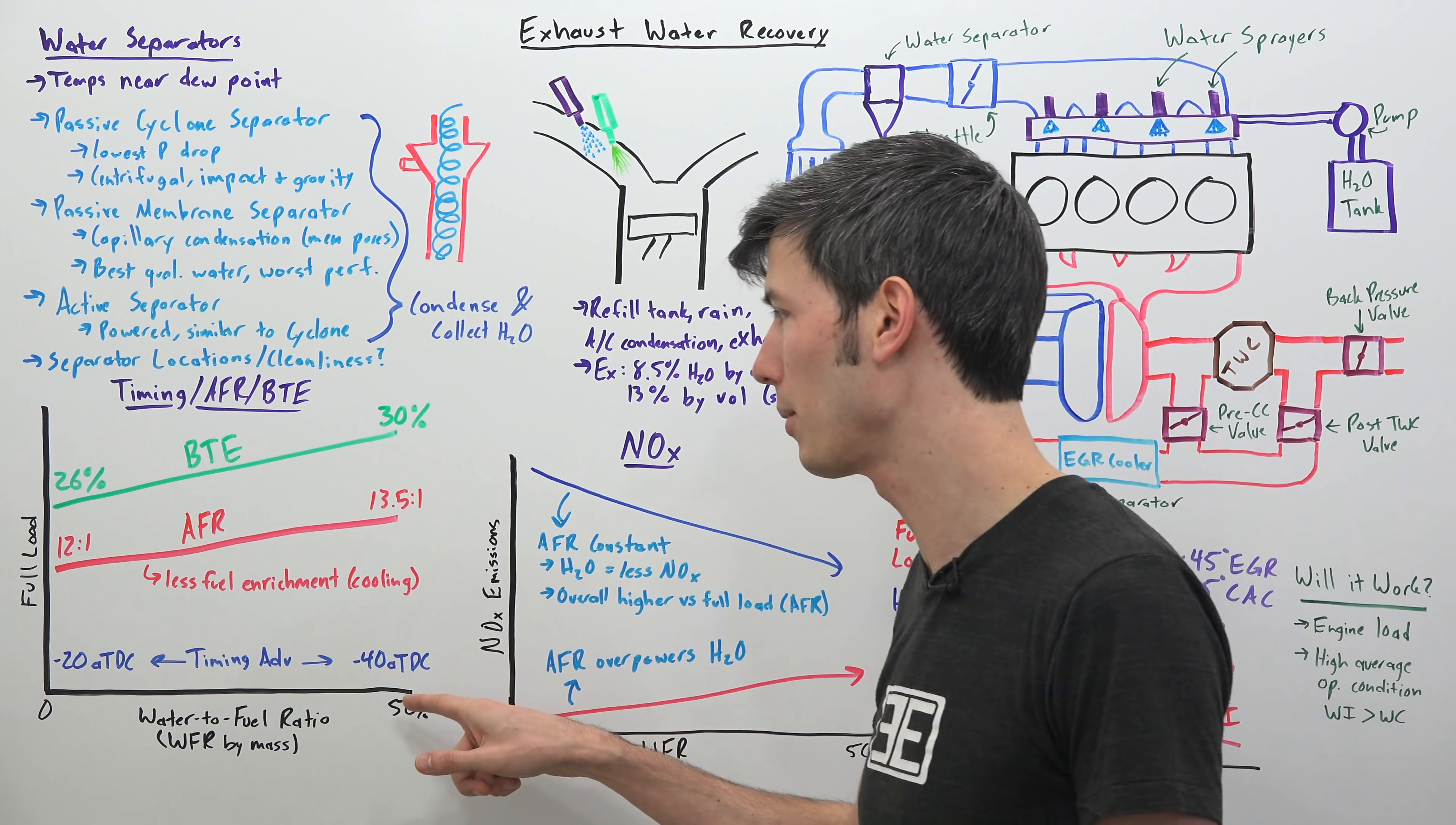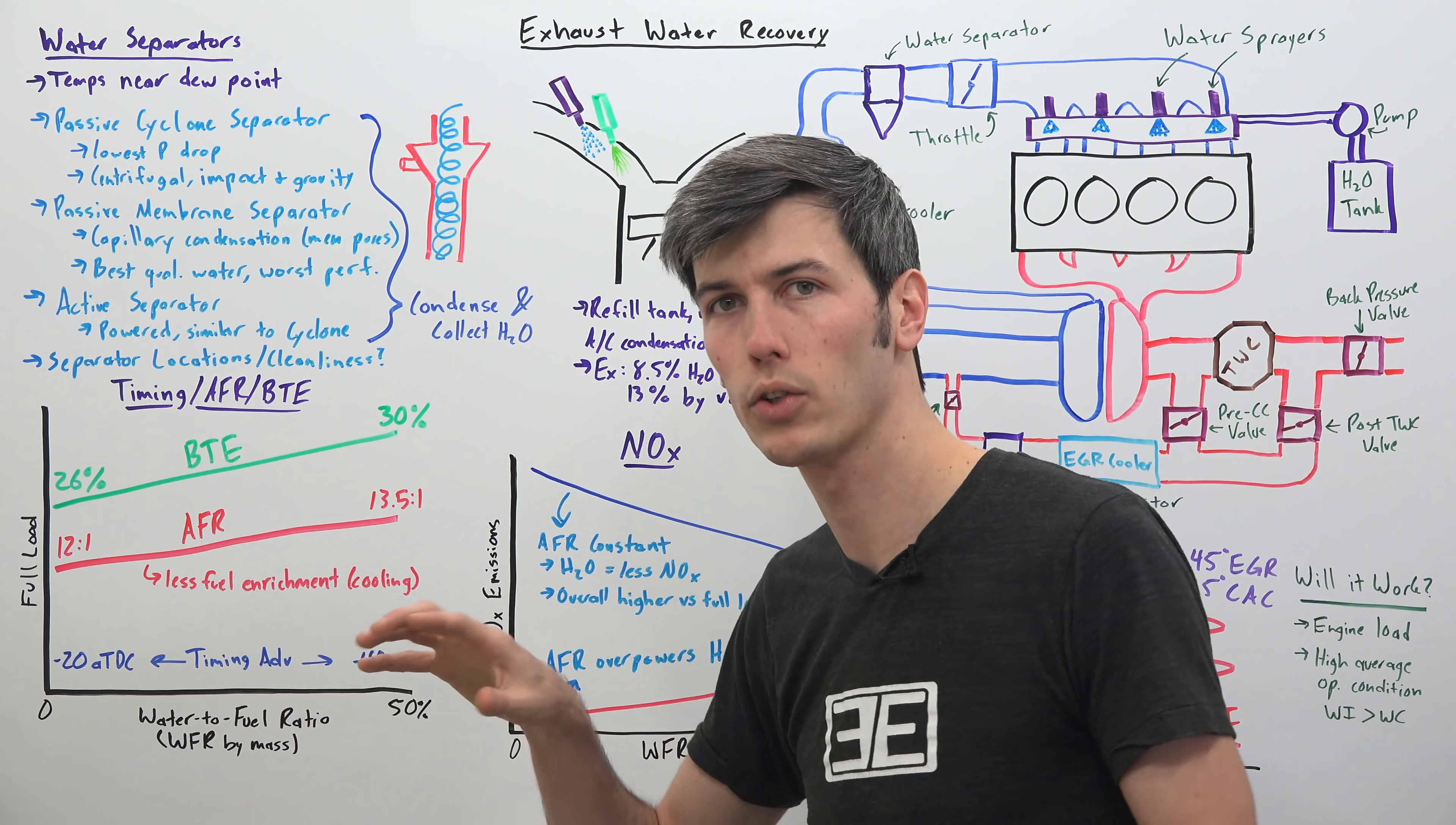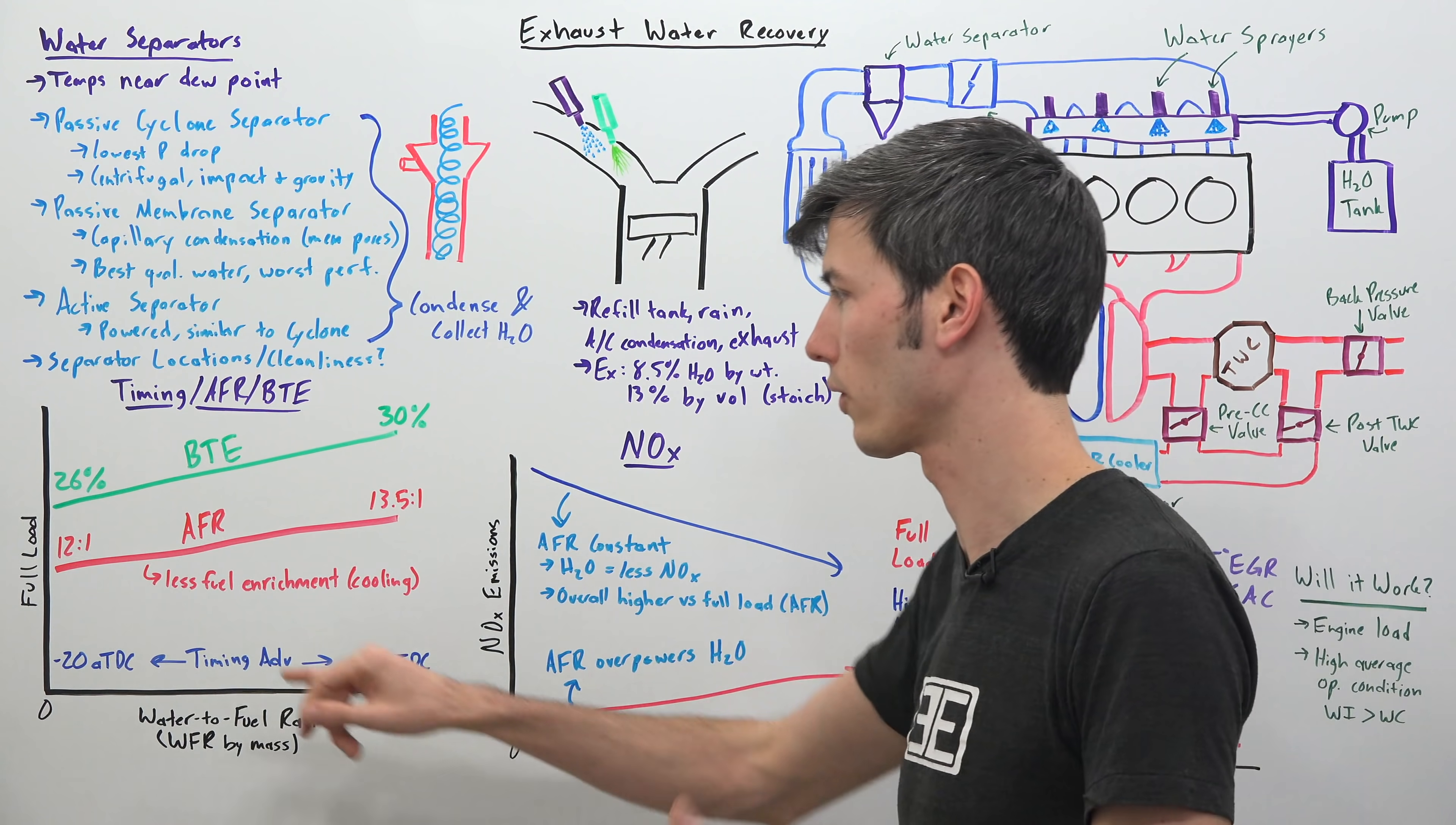So a significant amount of timing advance. They also found that they could lean out, not lean but a less rich mixture could be used if they were using a fifty percent water to fuel ratio. So where it was operating at a twelve to one air to fuel ratio with full throttle they can bring that as high as thirteen point five to one with the water injection system. Still operate safely and still operate with cool temperatures. So it's doing this twelve to one to operate safely keep the temperatures down. It doesn't have to do that as much when you're using the water injection system.